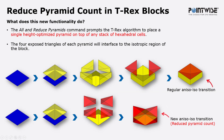I have two images right here that will hopefully clarify what is going on. The first image corresponds to the second TREX option called All TETS, Pyramids, Prisms, and Hexes.